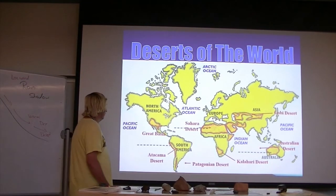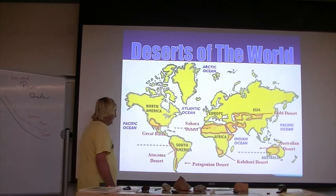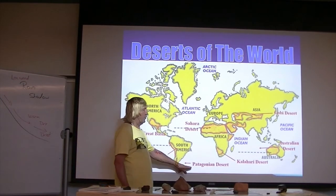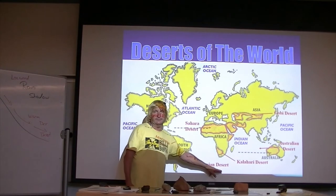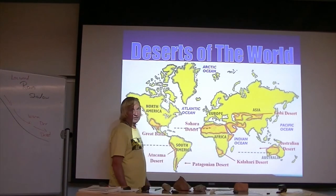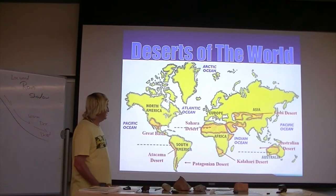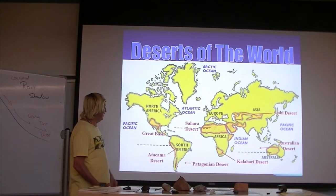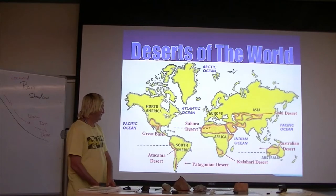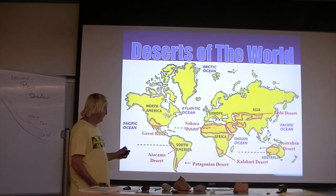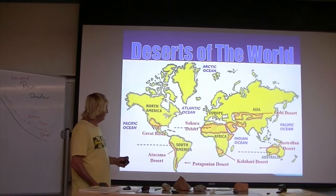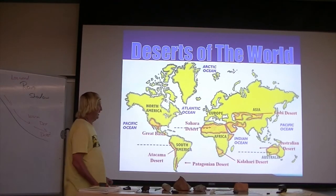The driest desert in the world is the Patagonian Desert — it has gone the longest period without any rainfall, with some areas going decades without rain.